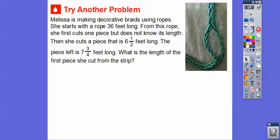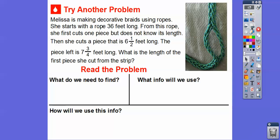All right, let's try another one here. So, Melissa is making decorative braids using ropes. She starts with a rope that's 36 feet long. From this rope, she first cuts one piece but does not know its length. Then she cuts a piece that is 6 1⁄2 feet long. And then the left over piece is 7 3⁄4 feet long. So what is the length of the first piece cut from the strip? So it's going to be the first piece, which is unknown. We'll call it R for rope. And then the second piece is this 6 1⁄2, so the R plus 6 1⁄2, and then plus this left over piece right here is going to equal that 36 feet. So what do we need to find? This is always the last sentence. What is the length of the first piece of rope that she cut? So we need to know the length of the first piece.